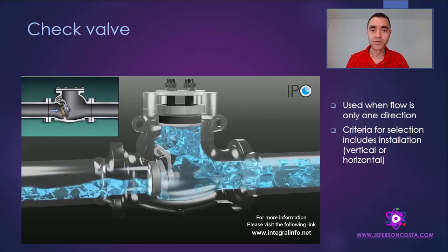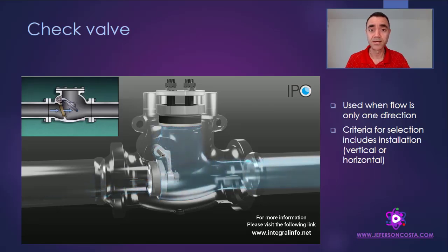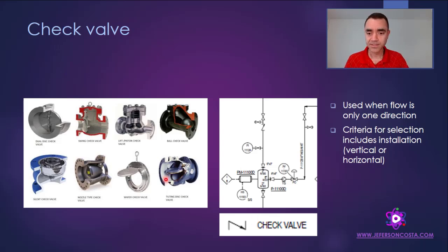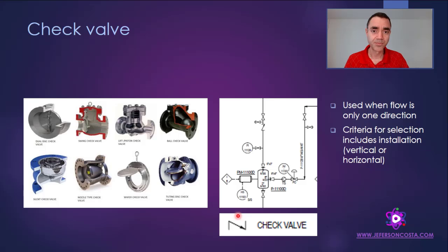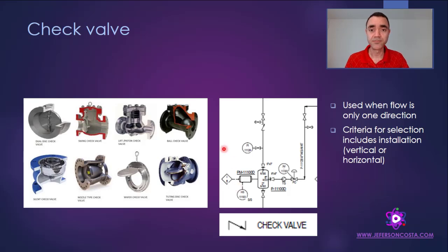The main use of the check valve is to guarantee that fluid does not flow in the wrong direction. There are different types of check valves, but they all share a mechanism that allows flow in one direction while preventing return flow. The direction of flow that is stopped is shown in the P&ID with a specific symbol — the arrow indicates flow from left to right, and return flow from right to left is blocked by the check valve. Depending on the type selected, it can be installed in a vertical or horizontal position.